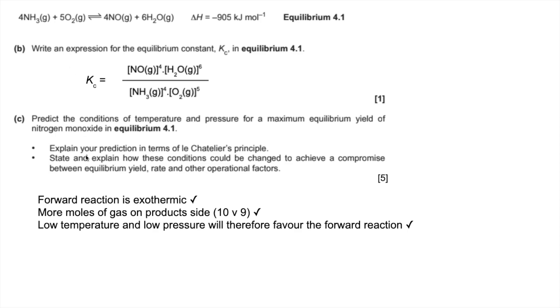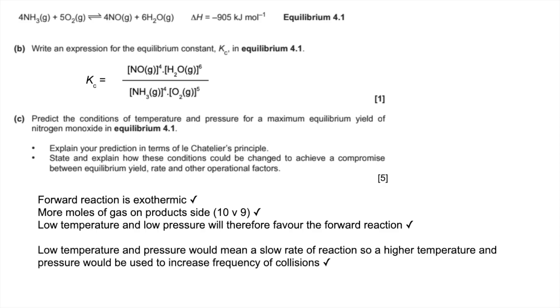The last thing we need to do is cover this final bullet point: state and explain how these conditions of low temperature and low pressure could be changed to achieve a compromise between the yield, the rate, and any other operational factors. A low temperature and a low pressure is going to give a low rate of reaction, which is not favorable. So they're probably going to increase the temperature, and that's going to give an increased frequency of collisions. But remember, the compromise there is those conditions are going to send the equilibrium more to the left-hand side and give a lower yield.